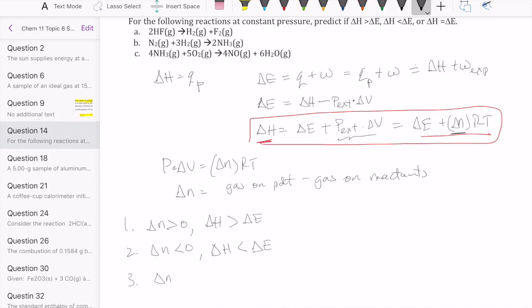The third scenario is if delta N is equal to zero, then your delta H is just equal to your delta E. So let's take a look at our reactions.